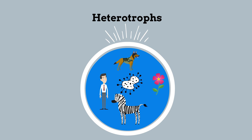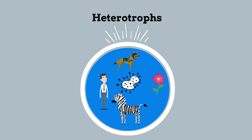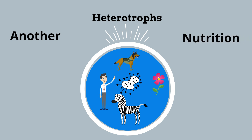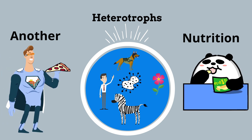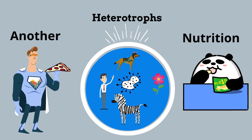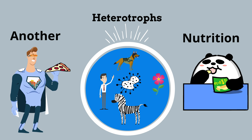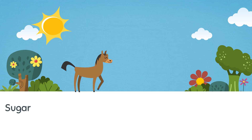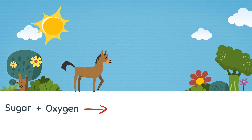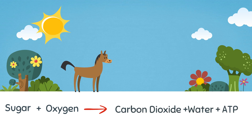Heterotrophs come from the Greek word heteros meaning another or different, and troph meaning nutrition or food. A heterotroph has to get their energy by eating other plants, animals, or decomposing once-living organisms. Some heterotrophs use sugar plus oxygen to produce carbon dioxide plus water and energy in the form of ATP. This process is called cellular respiration.